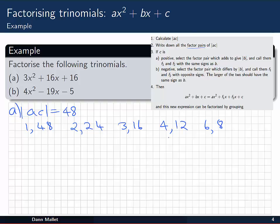Looking across the factor pairs, we find that 4 and 12 is the factor pair that will add to give 16. So we're going to call those f₁ and f₂ and give them the same sign as b in the quadratic. So f₁ = 4 and f₂ = 12.